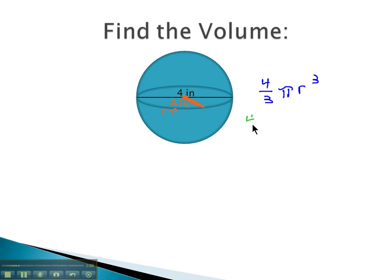Plugging this into our formula, we have 4 thirds times pi, which is 3.14, times the radius, which is 2 inches cubed.